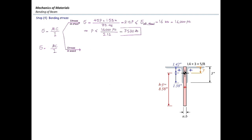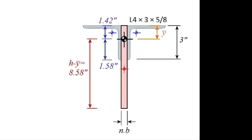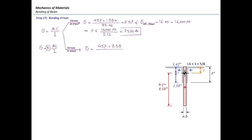For stress in wood, we use σ = n×MC/I, including the n-factor because the section has been transformed. C for wood is the farthest distance of wood from the centroid, which is at the bottom: H − y-bar = 10 − 1.42 = 8.58 inches. Setting n×(45P×8.58)/33.46 ≤ 1.3 ksi (allowable stress in wood) and solving for P gives P ≤ 18,400 lb approximately.